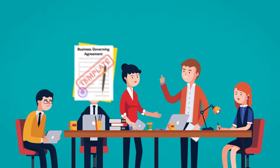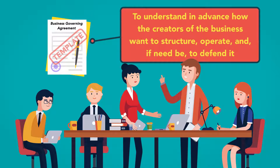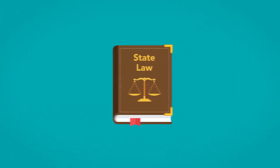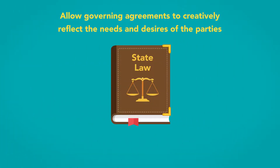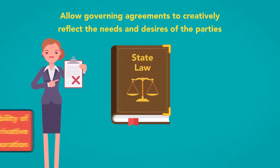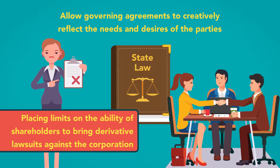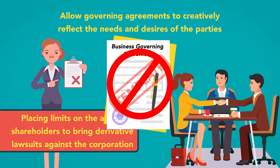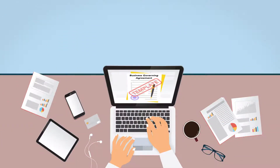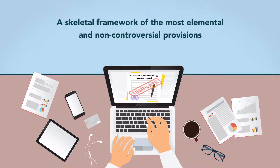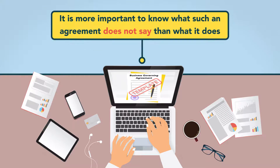Another consideration when choosing to use a general agreement template is to understand in advance how the creators of the business want to structure, operate, and if need be, to defend it. State laws allow governing agreements to creatively reflect the needs and desires of the parties, such as by placing limits on the abilities of shareholders to bring derivative lawsuits against the corporation, or directing the appropriate form in which to resolve intracompany disputes. But these will likely not be in a basic template. In short, what users of a universal template will likely start with is a skeletal framework of most of the elemental and non-controversial provisions. To make it a complete governing agreement, it is more important to know what such an agreement does not say than what it does say.